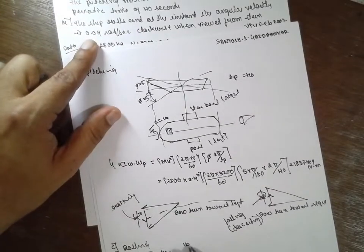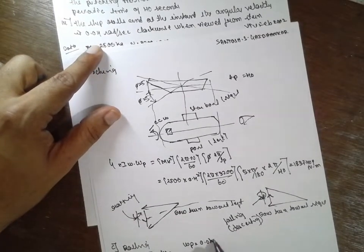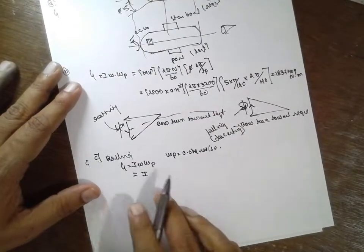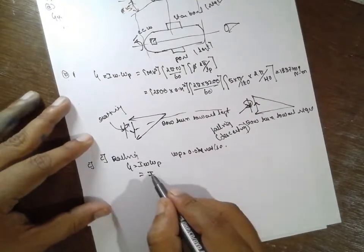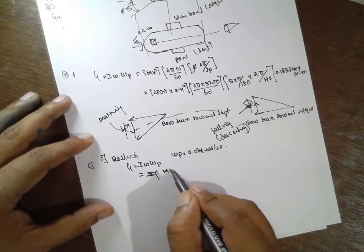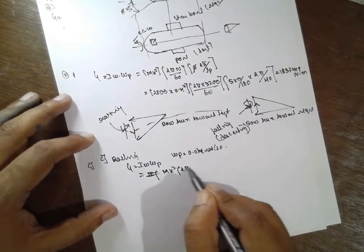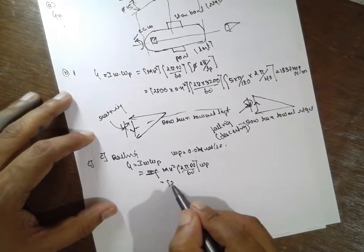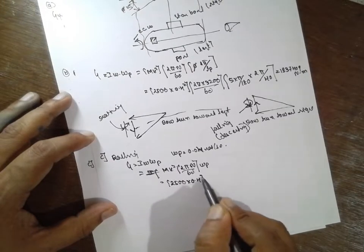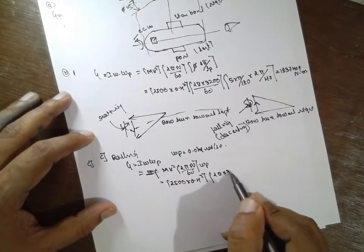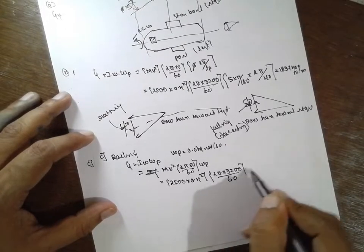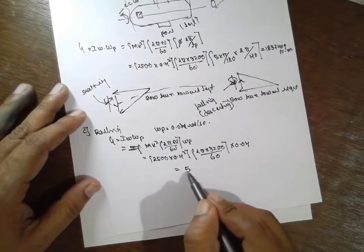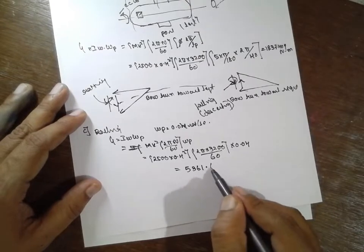They directly given that omega P is 0.04 radian per second. Now substitute the value in this formula. I, mk square, 2 pi n divided by 60, into omega P. mk will be 2500 into 0.4 square, 2 pi into 3200 divided by 60, into 0.04. The answer for this one is 5361.65 newton meter.